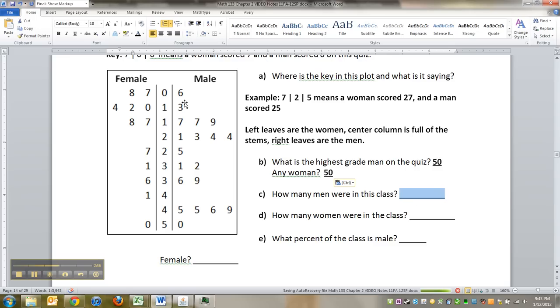Now, how many men were in the class? Okay, so counting: 1, 2, 3, 4, 5, 6, 7, 8, 9, 10, 11, 12, 13, 14, 15, 16, 17, 18, 19. There's 19 leaves on the men's side.